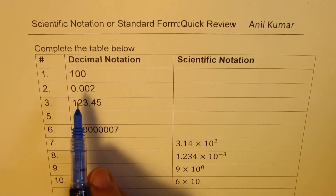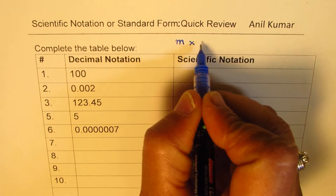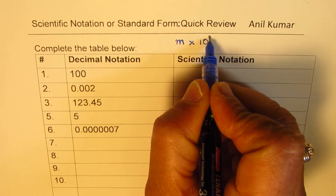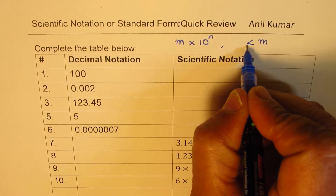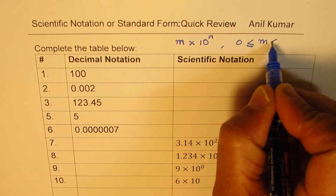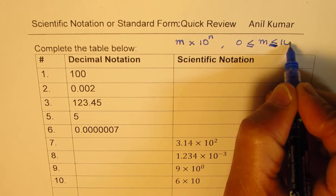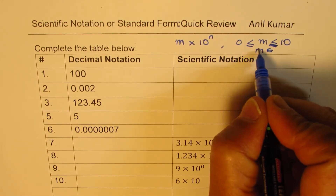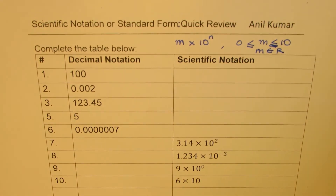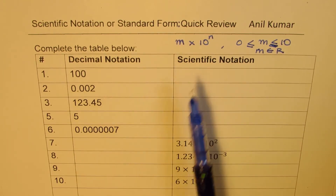Whenever we want to write numbers in scientific notation, we are basically writing them in the form of m times 10 to the power of n, where m is between 1 and less than 10, and m belongs to real numbers. That is how we write the numbers in standard form. n is the index, and that gives you the order of the number.